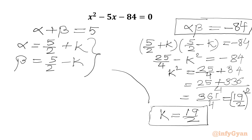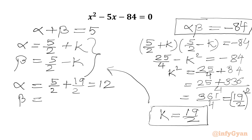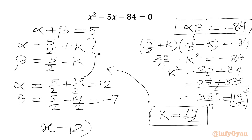Taking the square root, k = 19/2. So alpha = 5/2 + 19/2 = 24/2 = 12, and beta = 5/2 − 19/2 = −14/2 = −7. The factors are (x − 12)(x + 7) = 0, and the roots are 12 and −7.